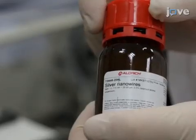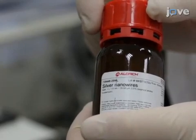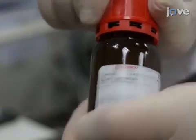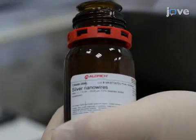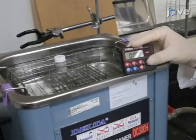Next, fabricate the stretchable conductive thin films. First, make the silver nanowire ink by diluting 2 milliliters of 0.5% silver nanowire in isopropanol into 18 milliliters of water. Sonicate this mixture for 30 seconds.